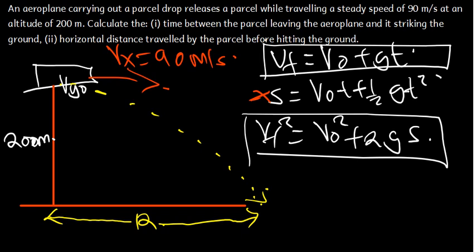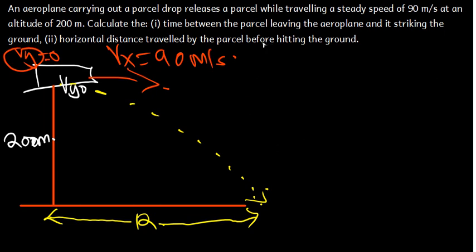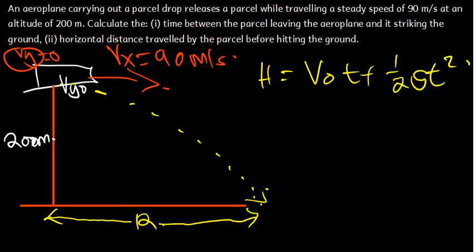Using the second formula with h instead of s: h = V_initial·t + ½g·t². We are talking about velocity in the y direction, so the initial velocity Vy is zero. The Vx of 90 meters per second is the velocity in the x direction, not the y direction. So we apply: h = Vy_initial·t + ½g·t².